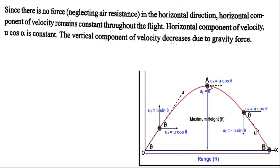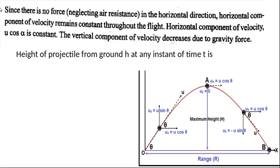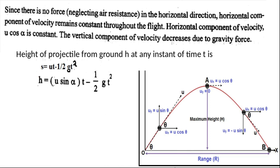At the maximum height (top point), the vertical component of velocity u sin alpha becomes 0. For the trajectory equation, we have y = u sin alpha × t − ½gt² for vertical distance, and x = u cos alpha × t for horizontal distance. From the horizontal equation, t = x / (u cos alpha).